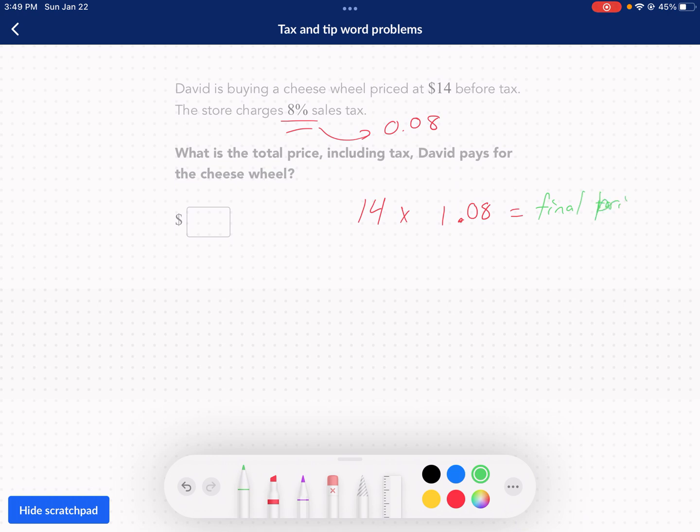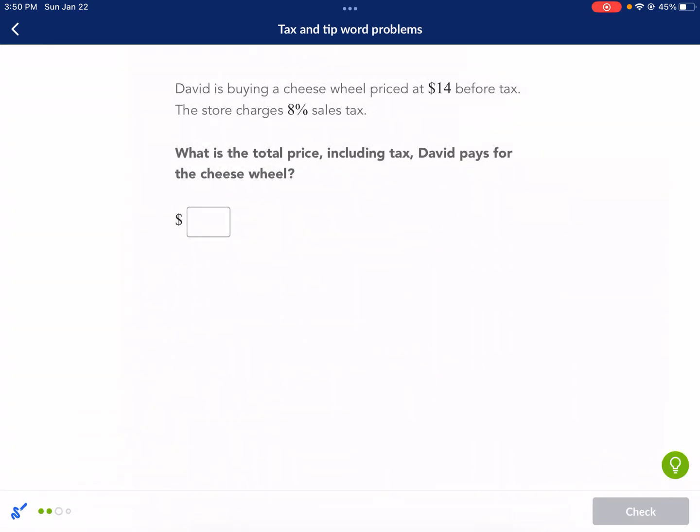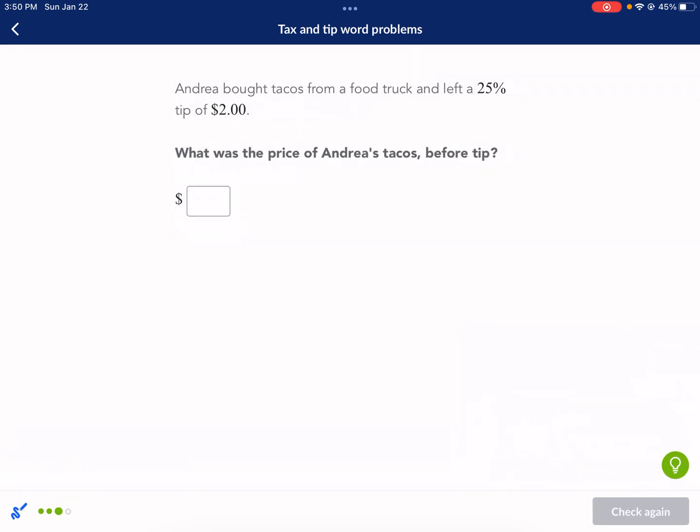So I have 1.08 times 14 survey says 15.12. So $15.12 is my final answer with the price. 15.12. There we go. All right. Last question.